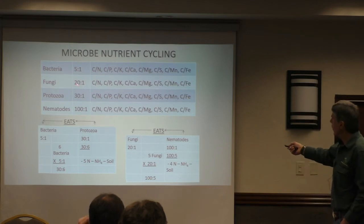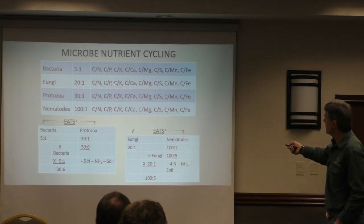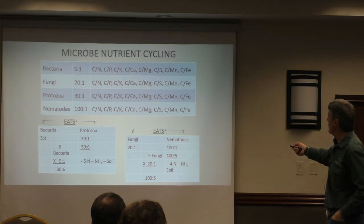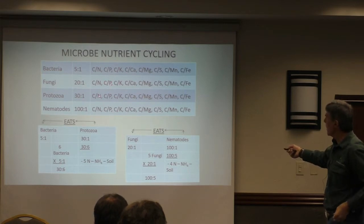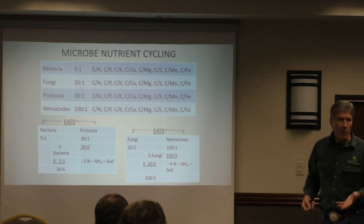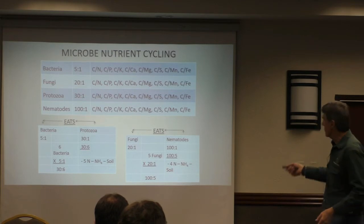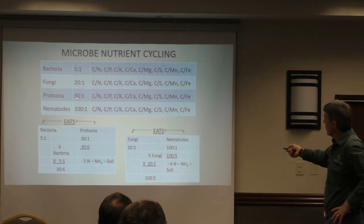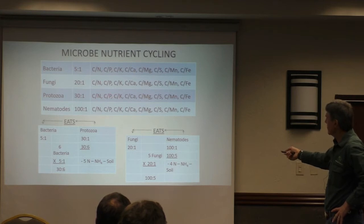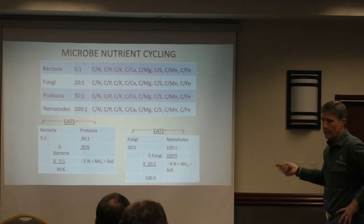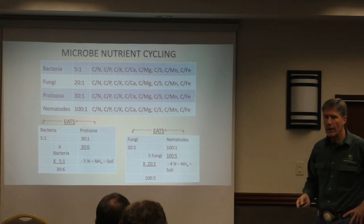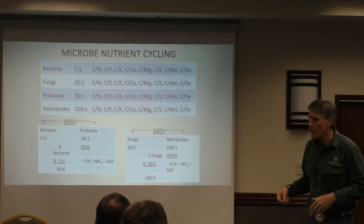Fungi: 20 carbons to one phosphate, potassium and on down. Protozoa — you and I, our cattle, our horses, our chickens — 30 carbons, one nitrogen, one phosphate, one calcium. Nematode: 100 to 1. So everything's at a different ratio.